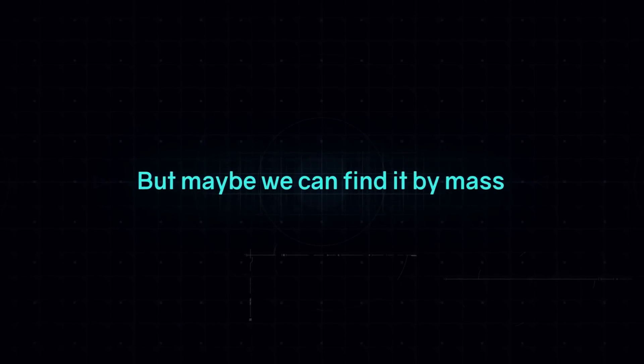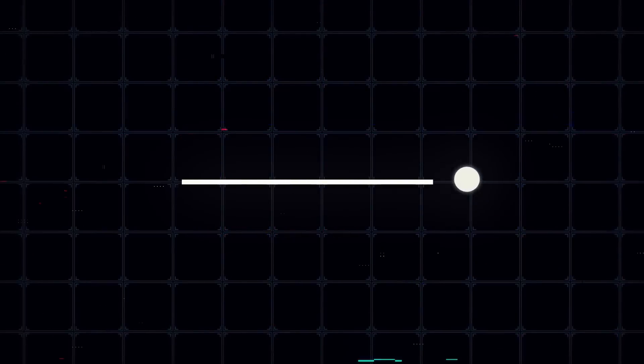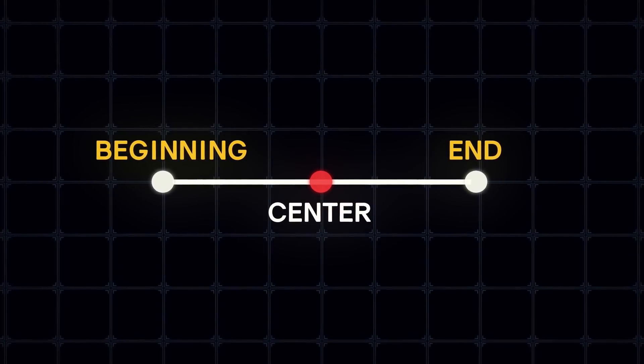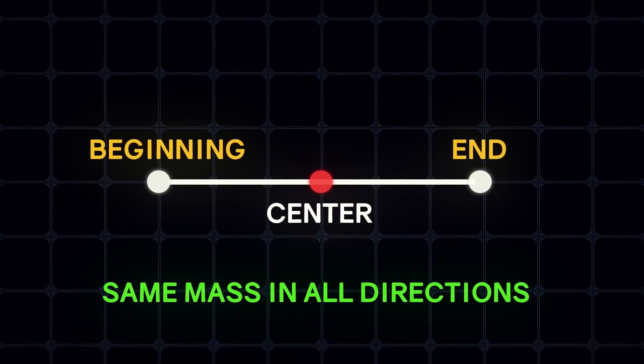But maybe we can find it by mass. If an object has an end, it has to have a beginning. And its center would be a point that, on average, has the same mass in all directions.